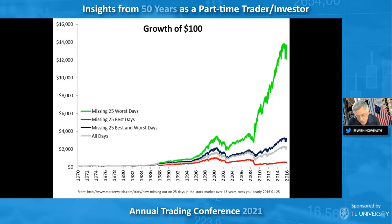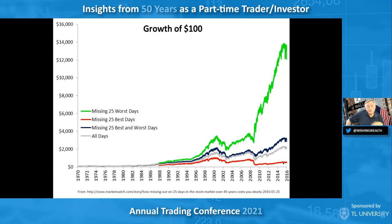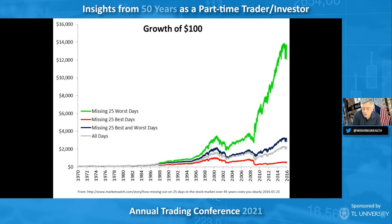A lot of brokers — and I tell my students, it's aptly named: your broker will make you broker — will use a study showing how you would have done if you'd been out of the market for just 25 days in a 45-year period. They show you a red line: if you missed the 25 best days, you did terribly. But what they don't show you is the green line — how you would have done if you missed the 25 worst days. If you're out during the worst days, you do a lot better. And I'm sorry when I see articles that never talk about that green line.